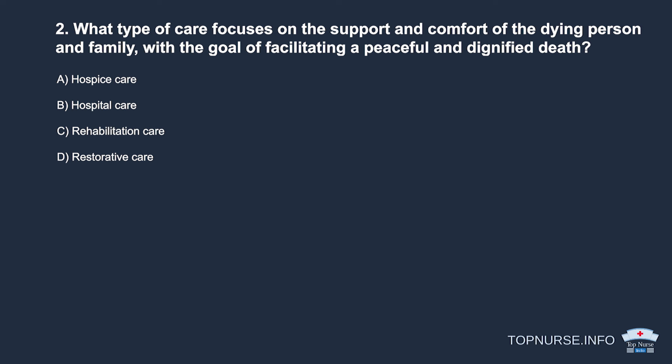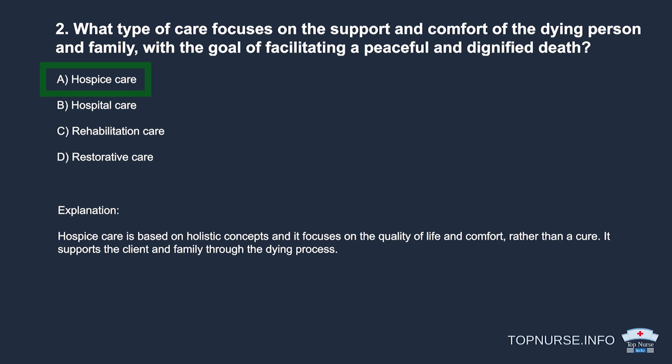Question 2: What type of care focuses on the support and comfort of the dying person and family, with the goal of facilitating a peaceful and dignified death? a. Hospice care. b. Hospital care. c. Rehabilitation care. d. Restorative care. Correct answer: a. Hospice care. Hospice care is based on holistic concepts and focuses on the quality of life and comfort, rather than a cure. It supports the client and family through the dying process.